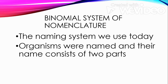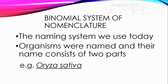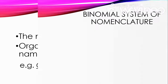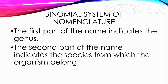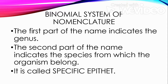Organisms are named and their name consists of two parts. For example, the scientific name of rice is Oryza sativa. The first part of the name indicates the genus and the second part indicates the species to which the organism belongs, also known as the specific epithet. So in Oryza sativa, Oryza is the genus and sativa is the specific epithet.